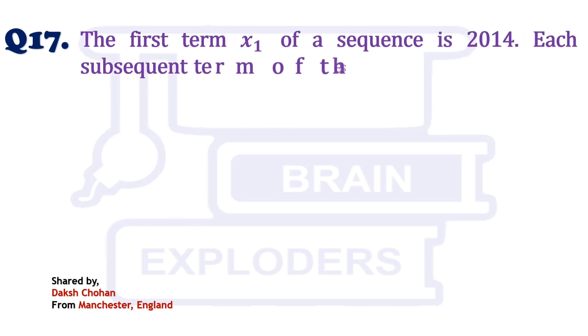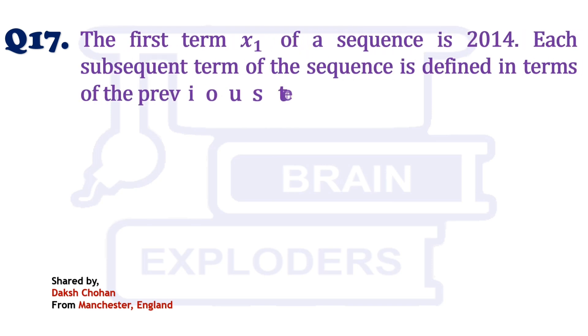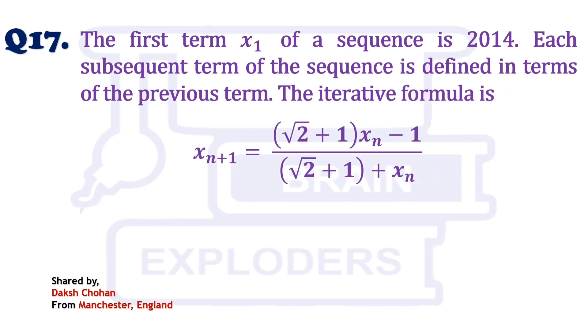The first term X1 of a sequence is 2014. Each subsequent term of the sequence is defined in terms of the previous term. The iterative formula is given below. Find the 2015th term.